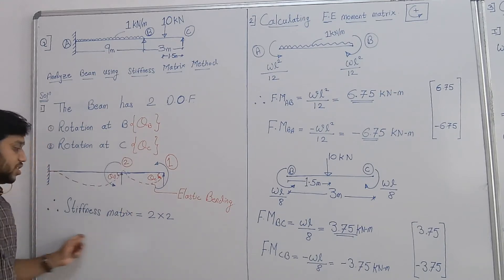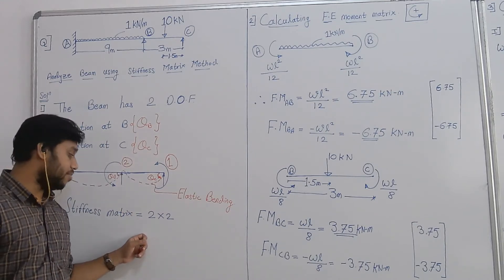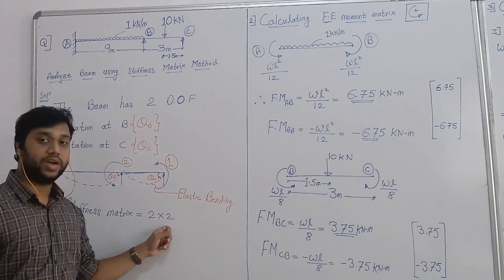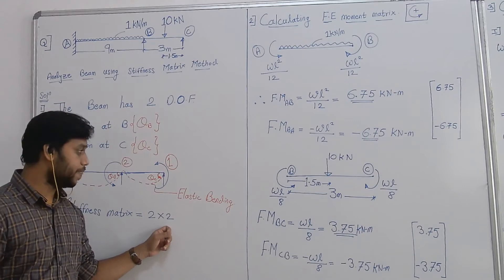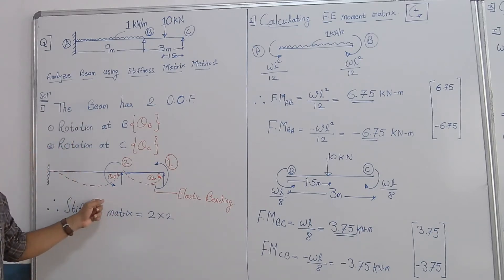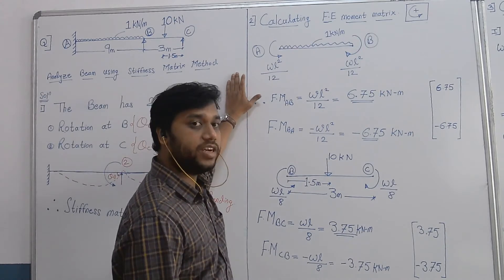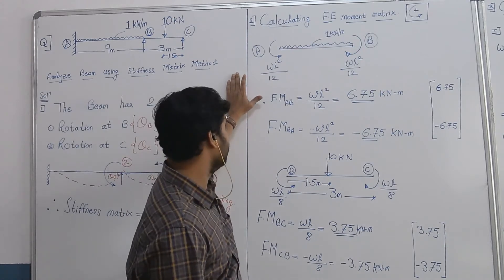Hence this structure has 2 degrees of freedom, theta B and theta C, so the total stiffness matrix is going to be of dimension 2 by 2. The next step is to calculate the fixed end moment matrix.